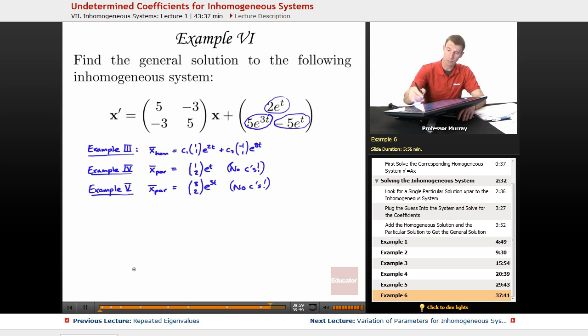And so what we want to do is just add all these solutions together, and we'll get the general solution to the problem, so all I'm going to do is just add up those three parts of the solution. I still have the c1 and c2 from the homogeneous part.